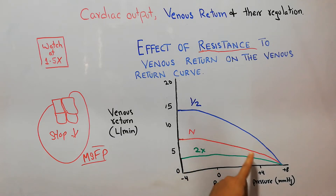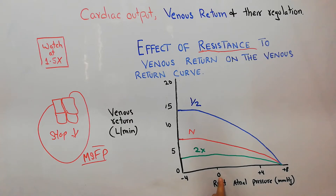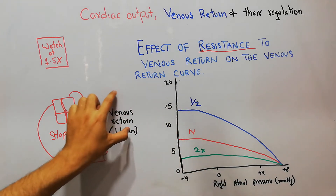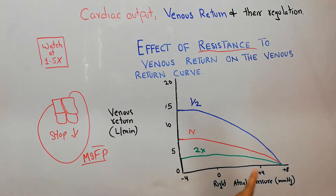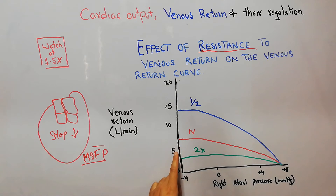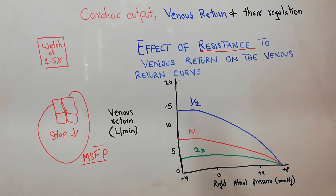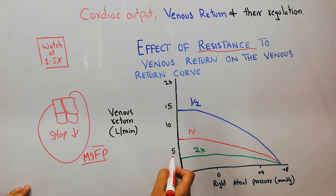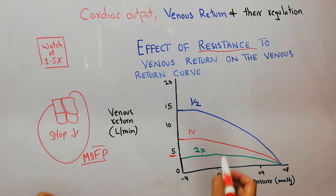This normal venous return curve shows that at a normal right atrial pressure of 0 mmHg, the venous return — shown on the y-axis in liters per minute — is around 5 liters per minute. So the normal venous return at this point is almost 5, maybe slightly more or less.